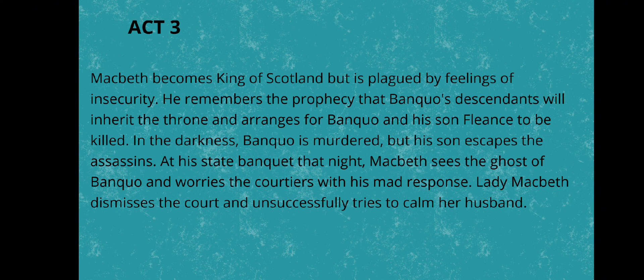Macbeth, dagger in hand, softly strode to the room where the king slept. On his way, he saw another dagger in the air. Its handle was towards him, and its blade and tip had blood. He tried to grab it, but met with nothing but air. He controlled his fear and entered the room where the king slept. With one thrust of the dagger, he killed him. Just then, one of the grooms laughed in his sleep. The other cried murder, with the result that both the grooms woke up. They said a short prayer and went back to sleep.